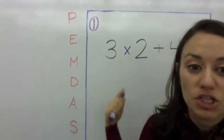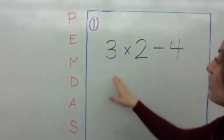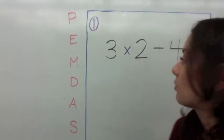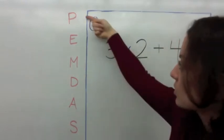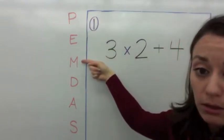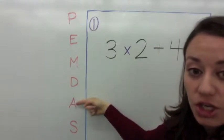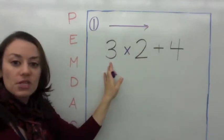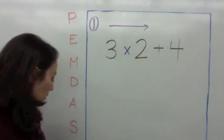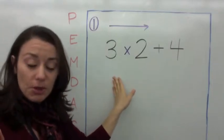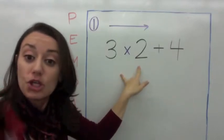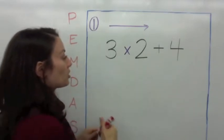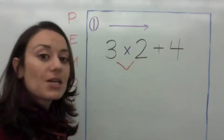When you work with three numbers but have two different operations, look at example one: 3 times 2 plus 4. What would you start with first — multiplication or addition? M comes before A in PEMDAS, so multiplication first, then addition. Remember it's from left to right. When working with three numbers, you make a V to show that you're working with two numbers at a time.